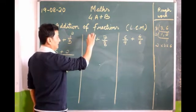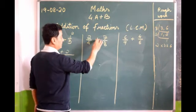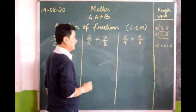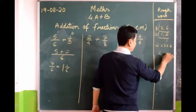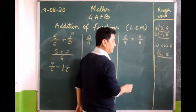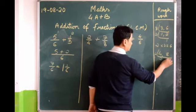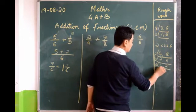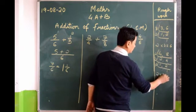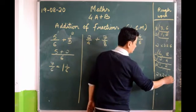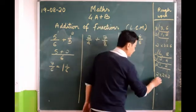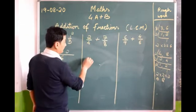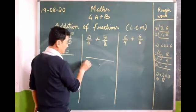Now let's do the next sum: 2/4 plus 7/8. The denominators are different, so we must find the LCM of 4 and 8. Which prime number can we use? 2. 2 goes into 4 twice and 2 goes into 8 four times. Continuing the prime factorization: 2 twos are 4, 2 fours are 8. So the prime factors give LCM of 8. Draw a line and write 8 in the middle.